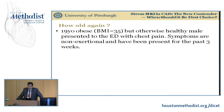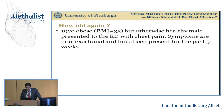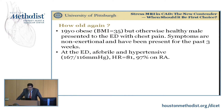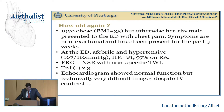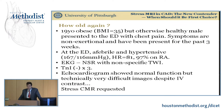Let's take a look at this case. He's 19 years old with a BMI of 35, but otherwise healthy, and presented to the emergency room with chest pain. The symptoms were non-exertional in nature and had been present for the past three weeks. At the ER, he was afebrile and hypertensive, with otherwise normal vital signs. EKG demonstrated normal sinus rhythm with non-specific T-wave inversions. He had three negative troponins. One could argue this patient could have gone to coronary CT, but we decided to start with echocardiography, admit to short stay, have the echo done — which showed very difficult images despite IV contrast — and then stress CMR was requested.